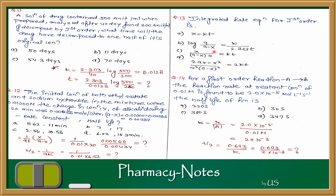Question 13: integrated rate equation for first order is? Looking at the four equations: x = kt is zero order. Log(a/a−x) = k/2.303·t is first order. Option C is second order and D is third order. The question asks for first order, so the answer is B: log(a/a−x) = k/2.303·t.